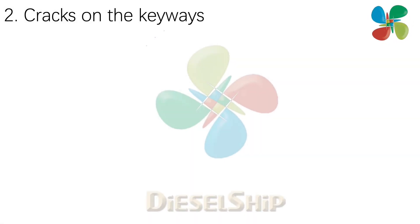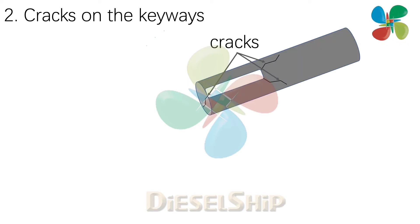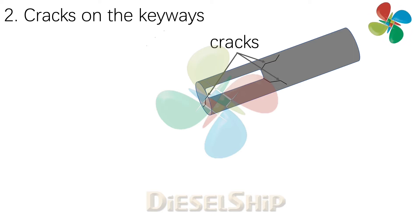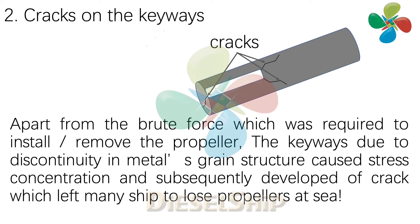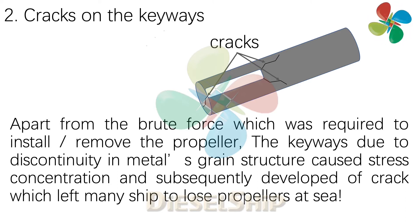The second reason is cracks on the keyways. As you can see in the picture, there is a discontinuity of the grain structure in the shaft due to the slotted keyway, and this causes cracks. These cracks caused many ships in that era — the 1950s to 1970s — to lose propellers, and even ships were lost due to unavailability of propulsion power.